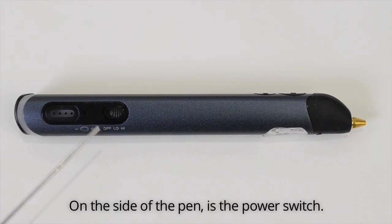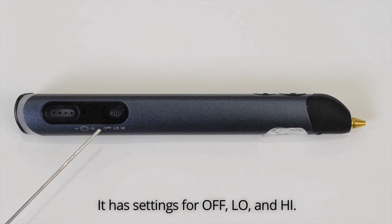On the side of the pen is the power switch. It has settings for off, low, and high.